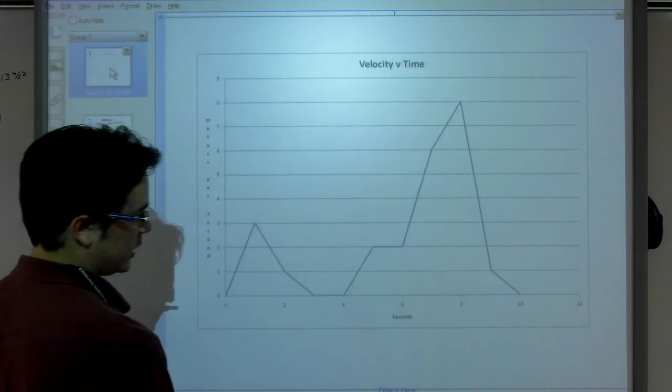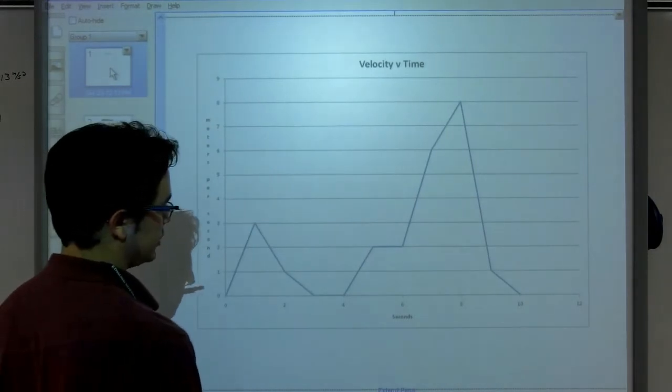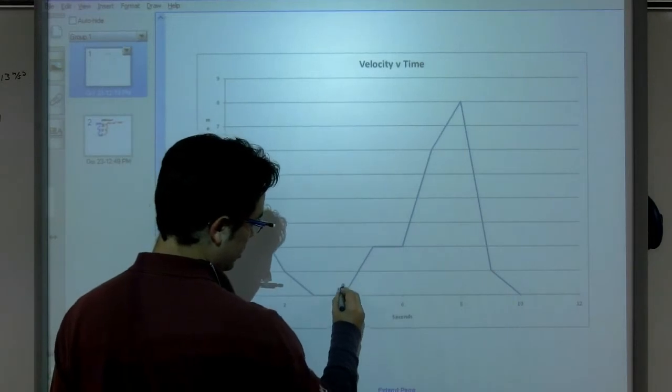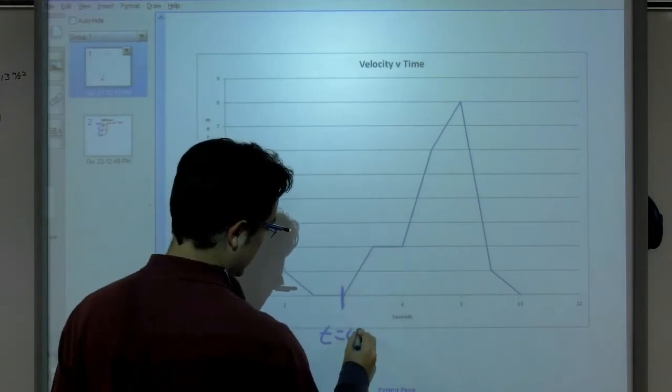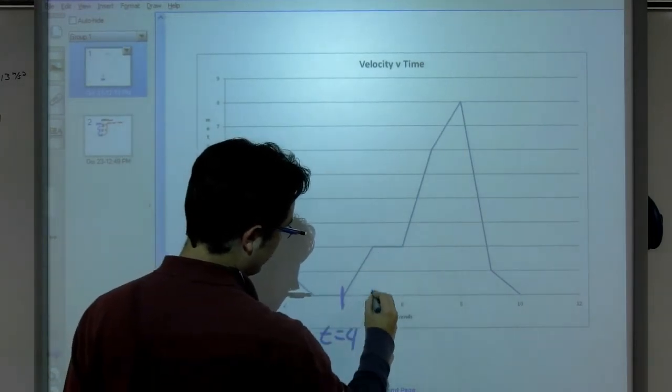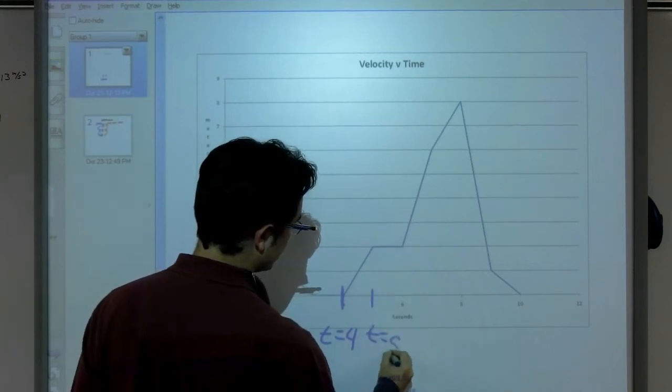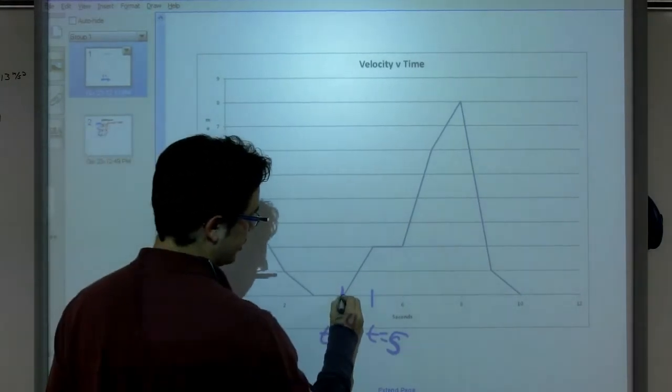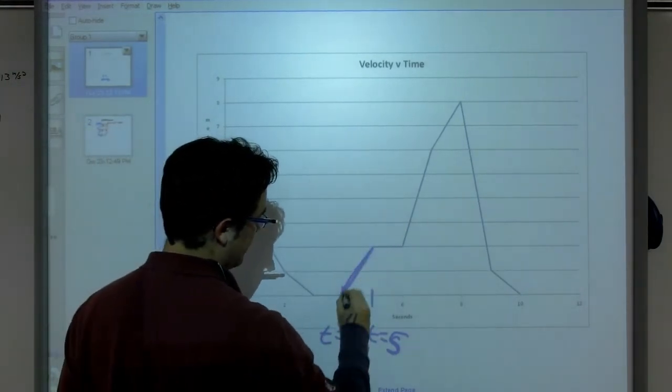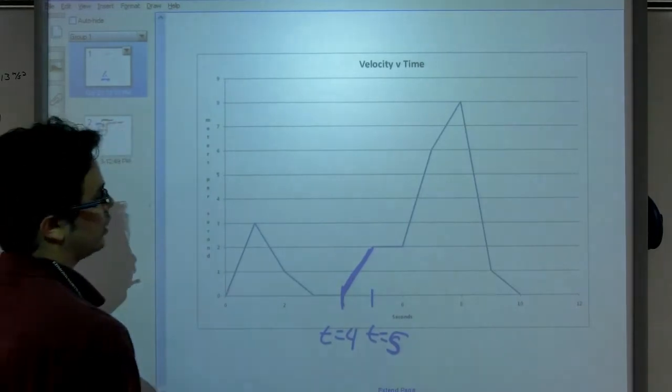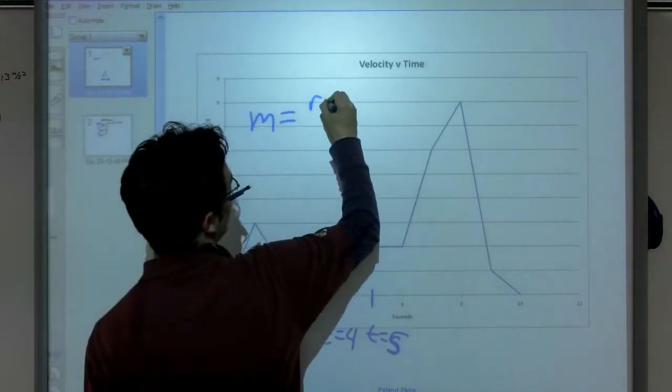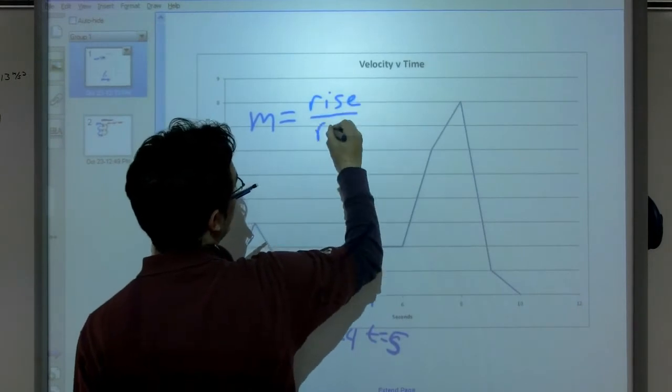And so if I want to find the acceleration from here, t equals 4, to here, t equals 5, I'm going to look for the slope right here, the slope of that line. Okay, well, my slope, m equals rise over run.